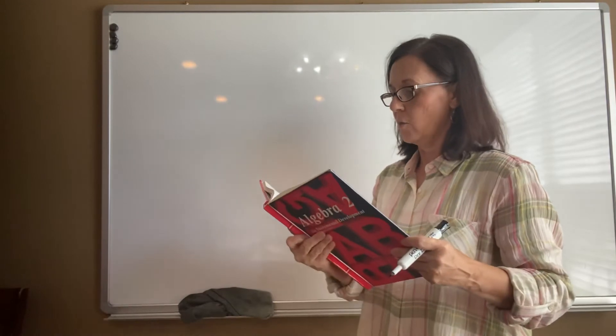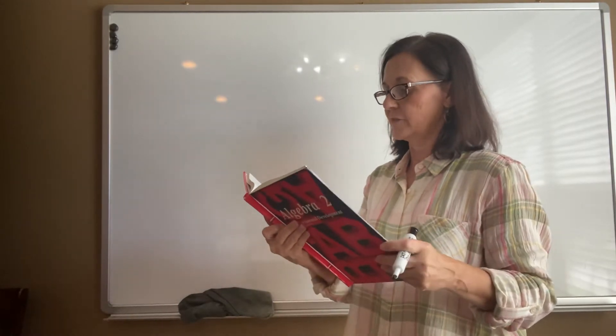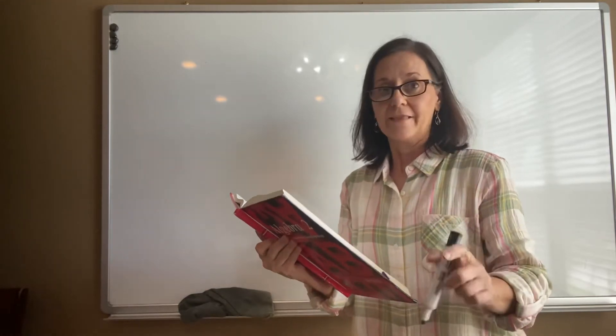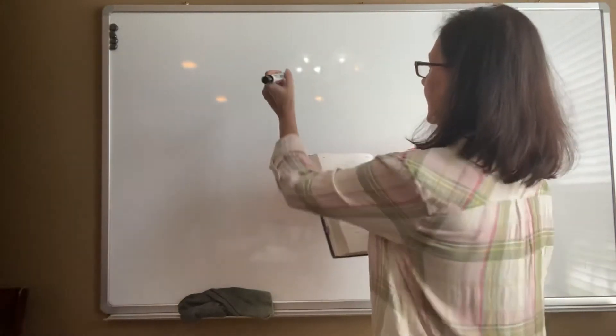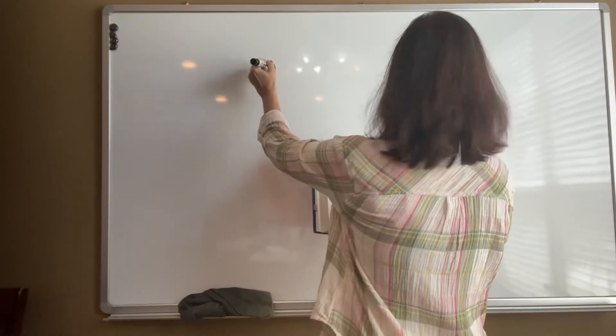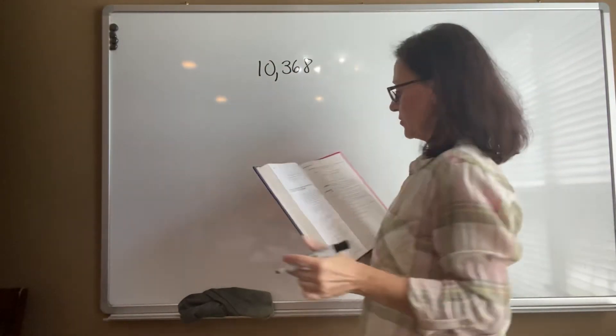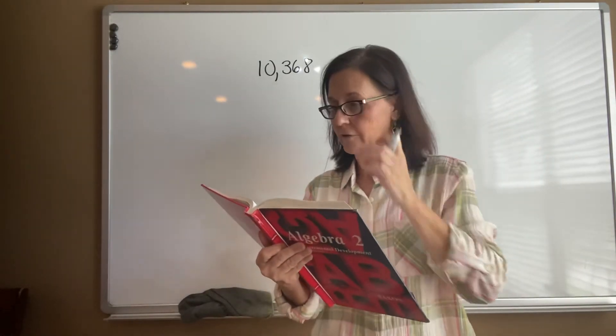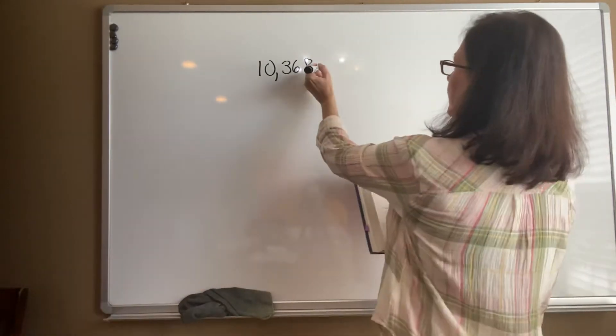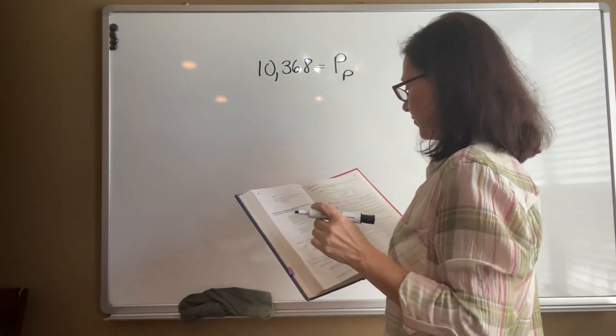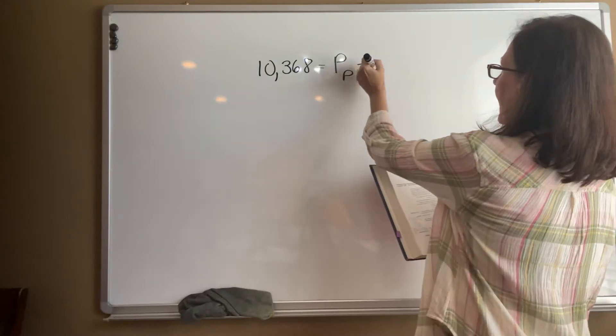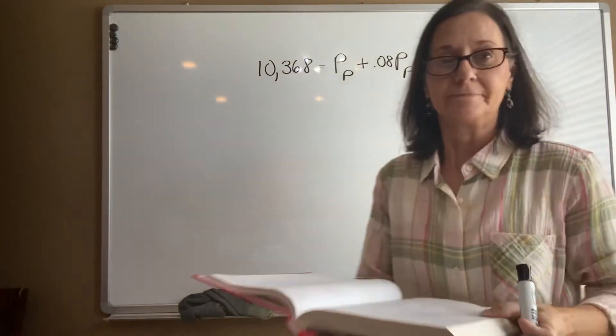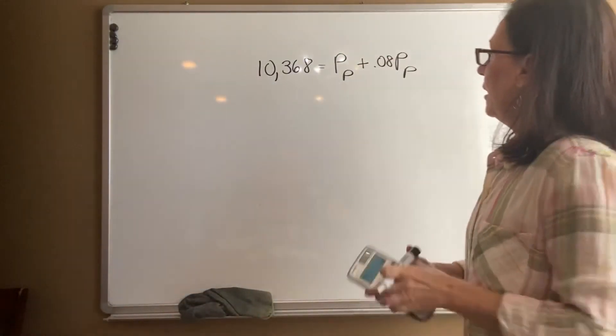Now let's look at 101.3 on the top of page 421. Now this one says the sports car retail—that means it's sold for. That's the selling price: $10,368. Well, if it's a sports car, it's got to be an older model, right? Not thinking this is a brand new model. What was the purchase price? So that's what we're solving for. If the car had been marked up 8%, 0.08 of the purchase price.